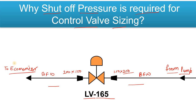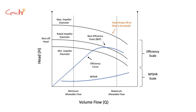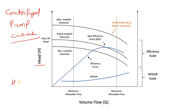Let me know in the comments box where the BFW will go from the economizer. Now, this pump is a centrifugal pump. To understand about shutoff pressure, let's look at the centrifugal pump curve.